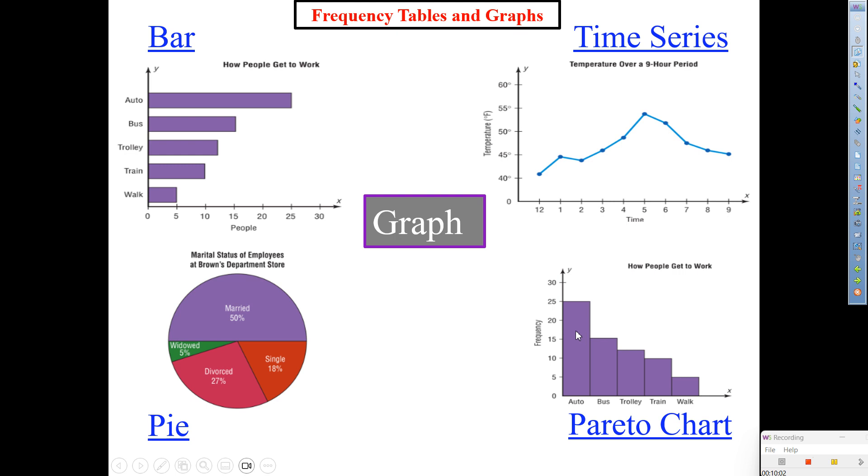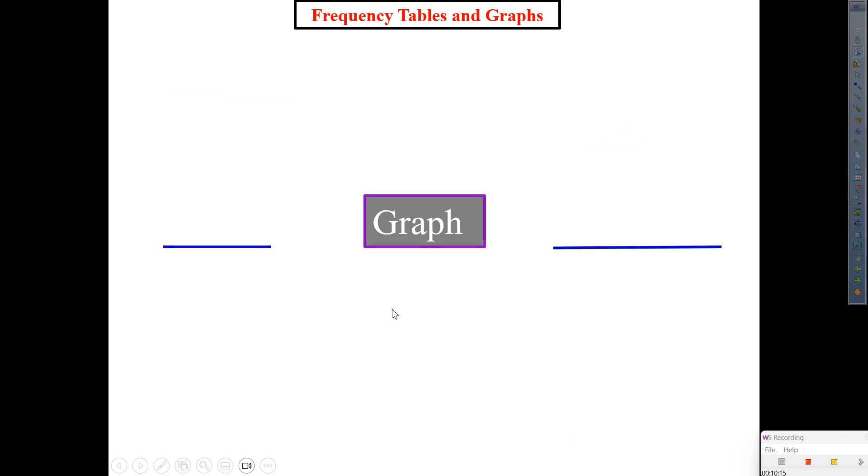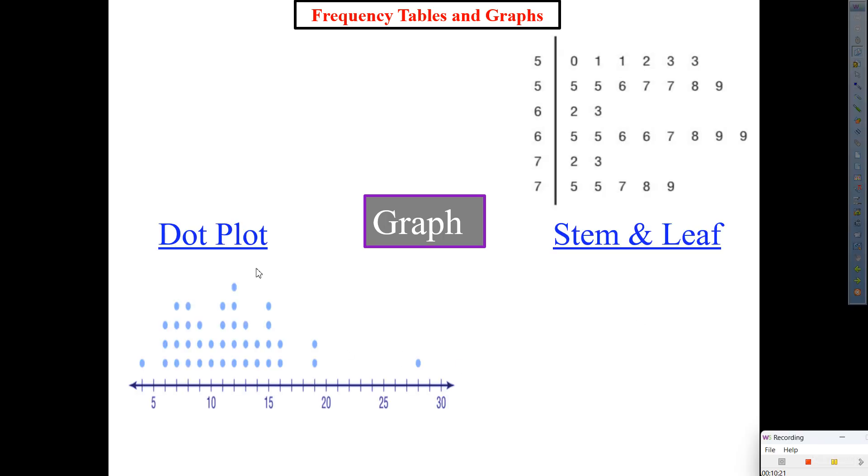All right. From there, we moved on to the last two. Last two. Type them in there. Dot plot and stem and leaf. We got this. Yes? All right.